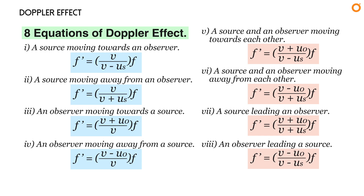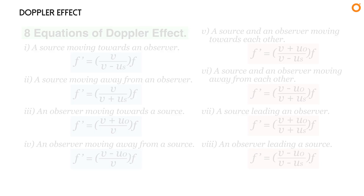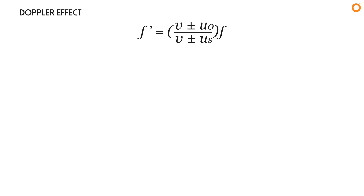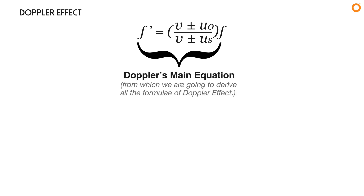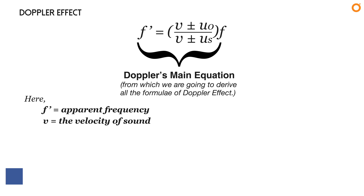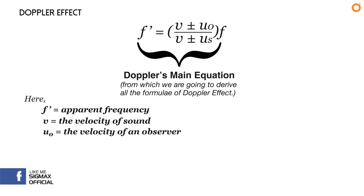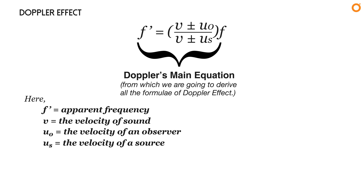Although there are eight different formulae, I want you to remember this one only: f prime equals to (v ± u₀) divided by (v ± uₛ) times f. This can be called Doppler's main equation, from which we are going to derive all the formulae of Doppler effect. Here, f prime represents apparent frequency, v represents the velocity of sound, u₀ represents the velocity of an observer, uₛ represents the velocity of source, and f represents actual frequency.